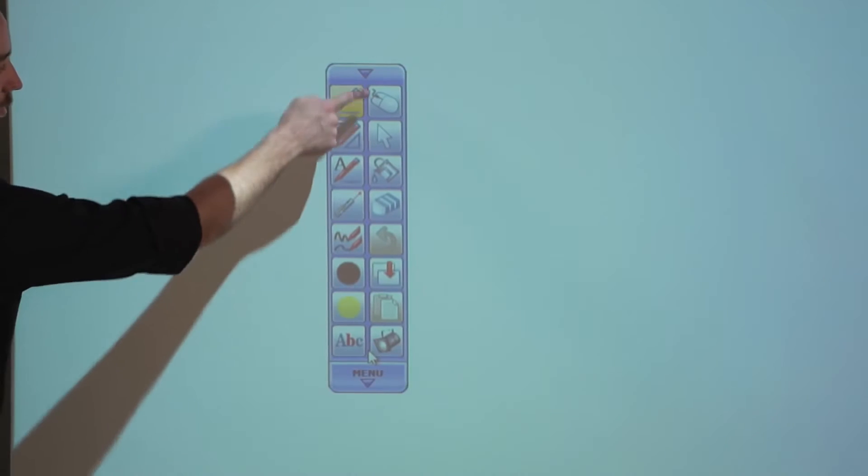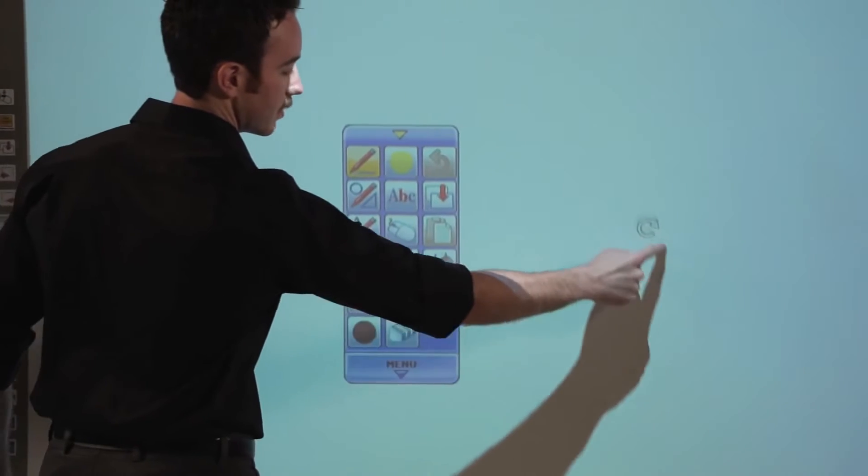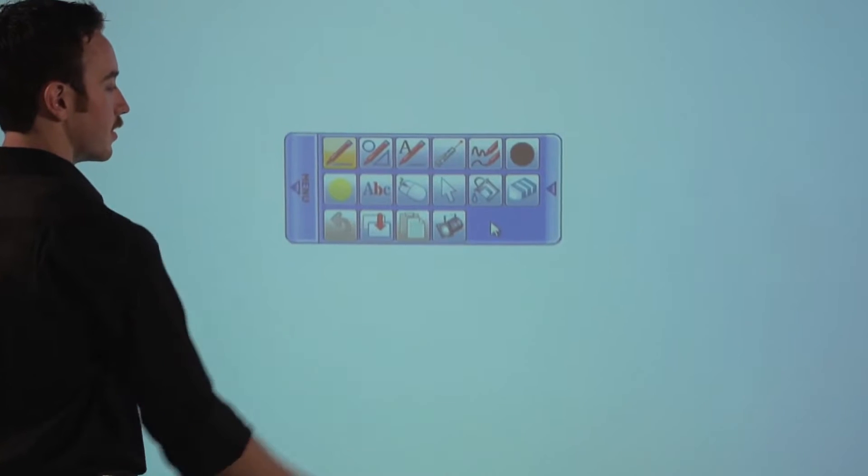Customize your Starboard workspace to suit your specific needs. Expand or collapse the toolbar and adjust its height and orientation based on your preference. Your workspace can have as many or as few layout options as desired.